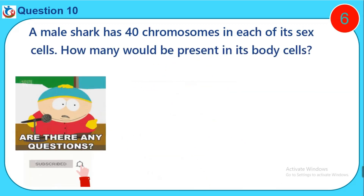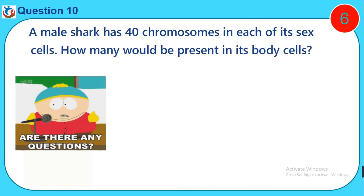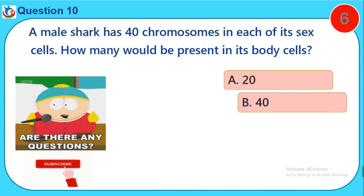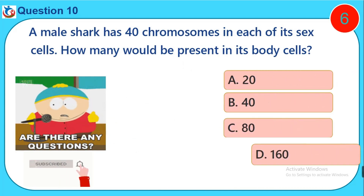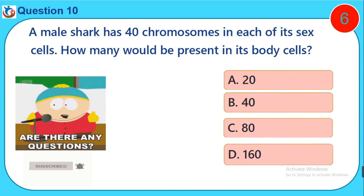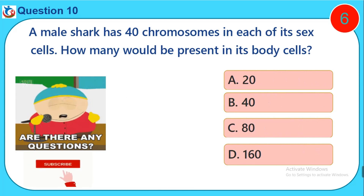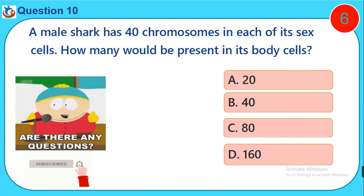Question ten: A male shark has 40 chromosomes in each of his sex cells. How many would be present in his body cells? A) 20, B) 40, C) 80, D) 160.